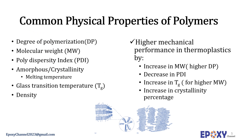Polymers, like other materials, have specific physical properties. It is important to note that all of these properties are reported as average values and there is no certain number for them. DP, or the degree of polymerization, refers to the number of monomers per each polymer chain. MW, or molecular weight, is the measure of the sum of the atomic weight values of the atoms in a molecule. Molecular weight is reported in different forms, with the number average molecular weight and weight average molecular weight being the main two. The polydispersity index (PDI) is the ratio of weight average molecular weight to the number average molecular weight.